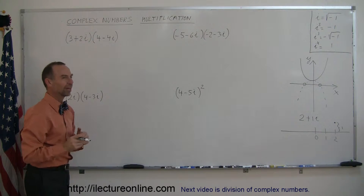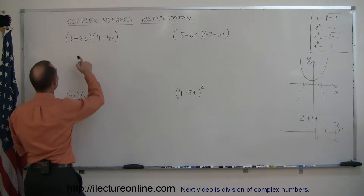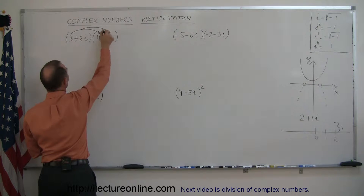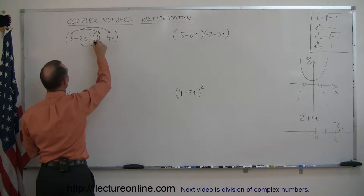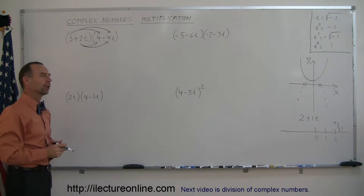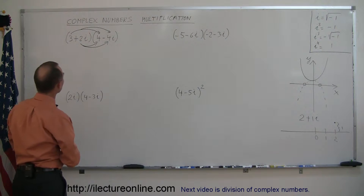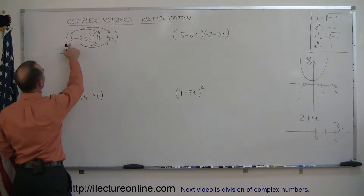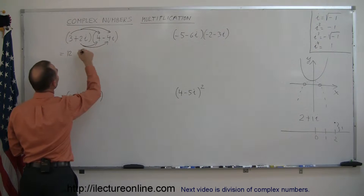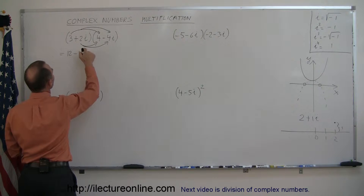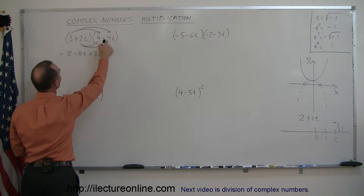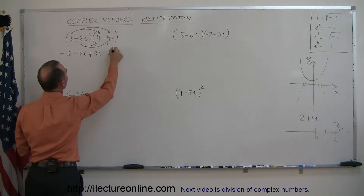Just like multiplying binomials, you're going to take the first term of the first binomial and multiply it times the two terms in the second, and then take the second term and multiply it again times the two terms in the second binomial. So this is equal to three times four, which is 12, plus three times negative four i, that's negative twelve i, plus two i times four, that's plus eight i, and two i times negative four i is negative eight i squared.